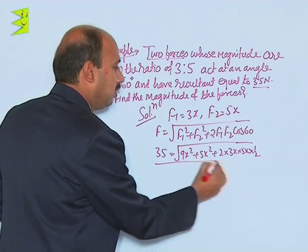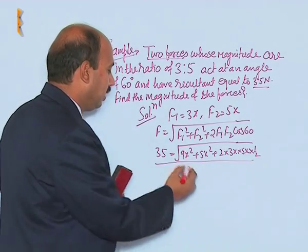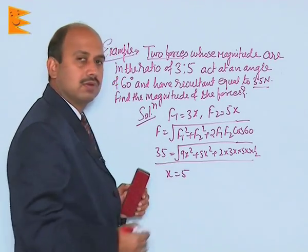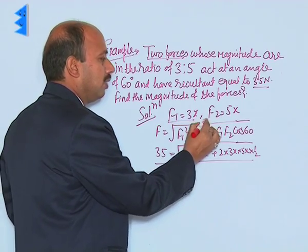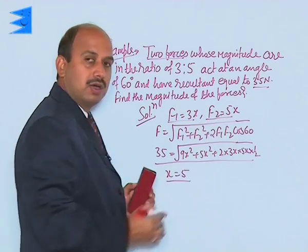When you solve this equation, you will be getting x is equal to 5. Now if you are getting x equal to 5, you can get the values of F1 and F2.